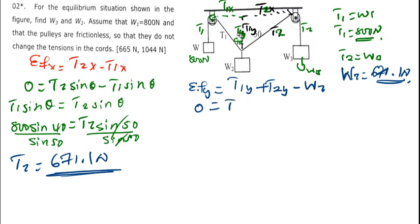Shift W2 to the other side. You end up having, what is my T1? My T1 is 800, so we have cos, the angle for T1 is 40.